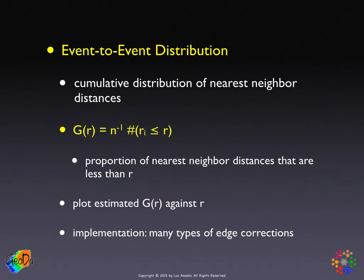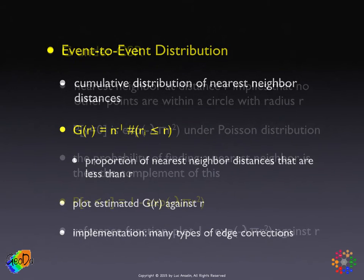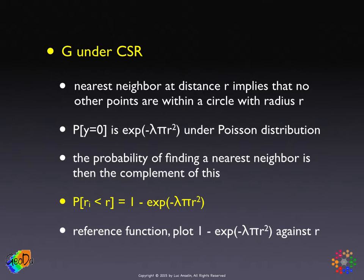Of course, the best way is if you have the points outside your polygon boundary, you don't need an edge correction because you can figure out which events might actually be the nearest to the events inside your polygon. So what is the G function as a function of distance under complete spatial randomness? We go back to the formal properties of a Poisson point process — specifically the probability of having no points within a given circle. The fact that your nearest neighbor is at distance r means by definition that there are no other neighbors closer than r — that circle with radius r has no points in it.